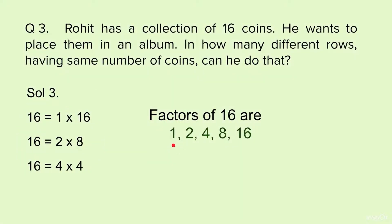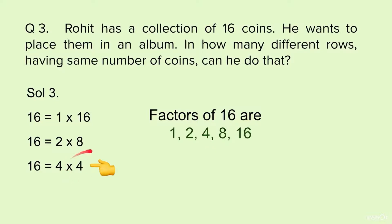For 1 row: 1 × 16, so 16 coins in that one row. For 2 rows: 2 × 8, so each row will have 8 coins — 8 + 8 = 16. For 4 rows: 4 × 4 = 16, so each row has 4 coins. For 8 rows: 8 × 2 = 16, so 8 rows will have 2 coins each. For 16 rows: 1 coin each, since 16 × 1 = 16.